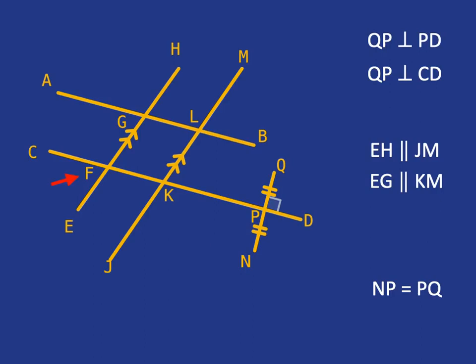Now just pay attention to that point F. Look at what F is. It's at the point where two lines cross. And how do we say that? We say that the line EH intersects the line CD at point F.